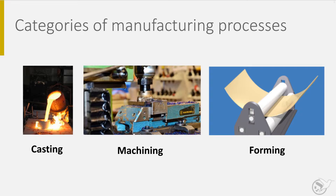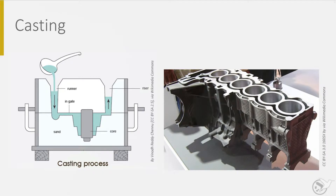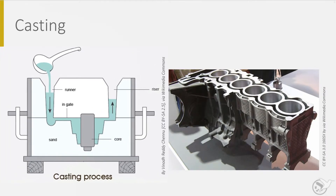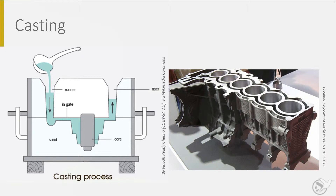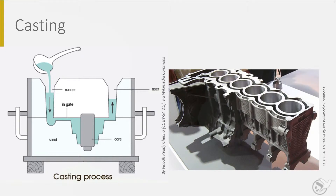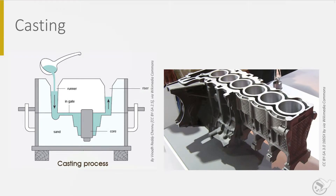The first category consists of the casting processes. The related property here is that a metal alloy can be molten. By increasing the temperature above its melting temperature, the metal becomes a liquid that can be poured into a die cavity, as shown on the left-hand side of this slide. The cavity has a number of features: a runner to pour the metal in the cavity, a riser that indicates when the cavity is filled, a gate that ensures a laminar flow of the molten metal into the cavity, and a core used to create a hollow product. Other features to mention are the draft angles — the slanted sides — to ease the removal of the part once it has become solid.